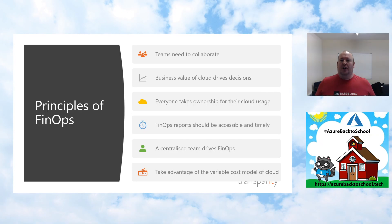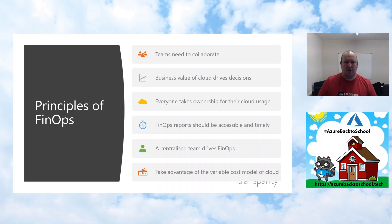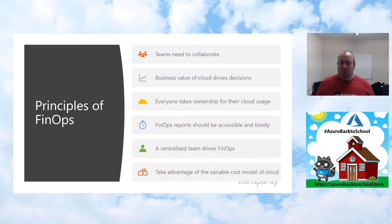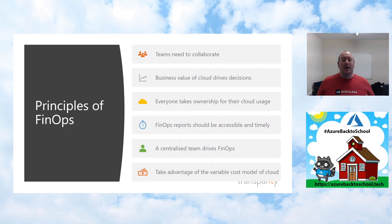There are six principles of FinOps. The first is around the need to collaborate — teams need to talk to each other and work effectively together. Similar to DevOps and DevSecOps, FinOps sits under that umbrella we call XOps, which includes DevOps, DataOps, AIOps, DevSecOps, and GitOps. The same principle applies: there is a need to make sure we can collaborate and that everyone is on the same page regarding goals.